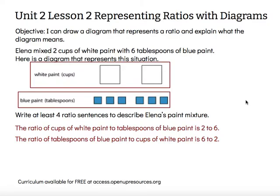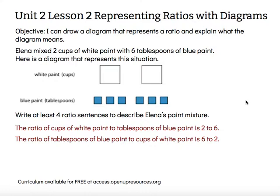You can see this represents the same two items, but it depends on which one you list first. We could also break her recipe down into a smaller portion — cut it exactly in half. If we wanted to make half as much paint, we would use one cup of white paint and three tablespoons of blue paint.